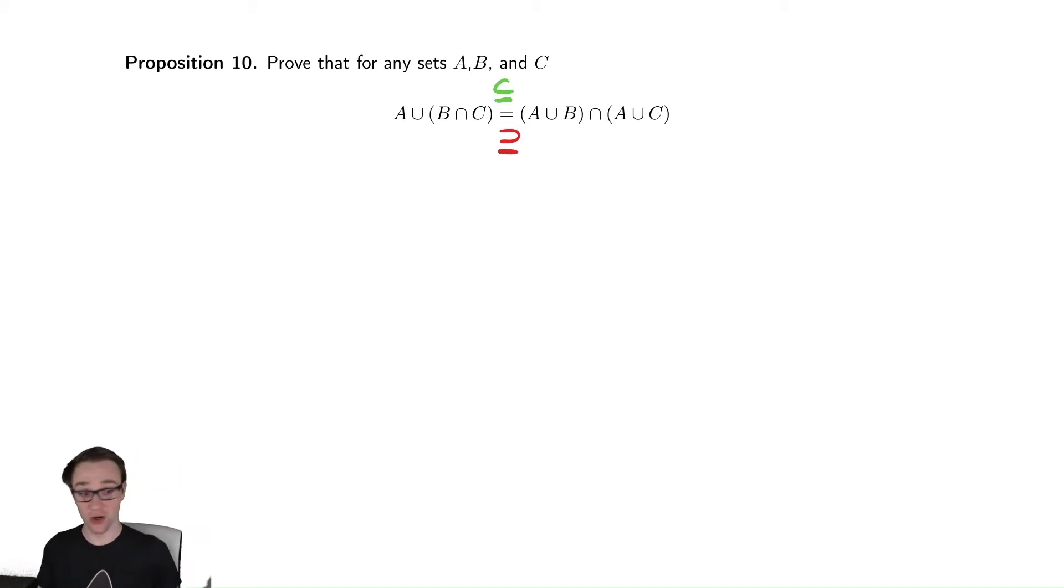If two sets are subsets of each other, the only way that can be true is that they are the exact same. So, we're going to try to prove that. When you have a proof that you need to prove two different ways, this happens commonly with these set types of proofs, or with proofs that are if and only if. That's an implication both directions, so you need to do two different types.